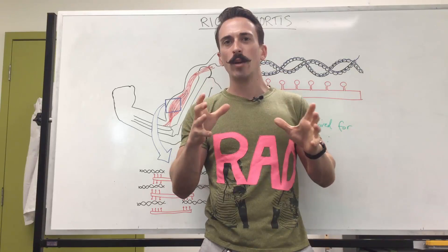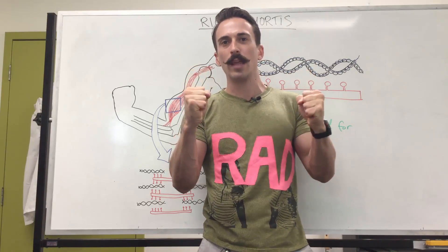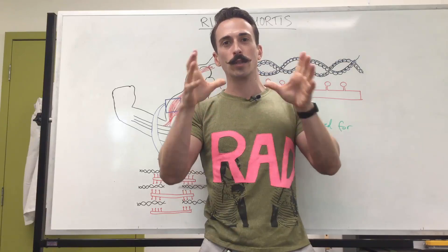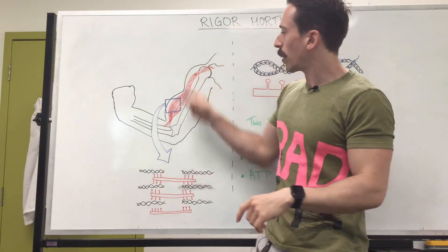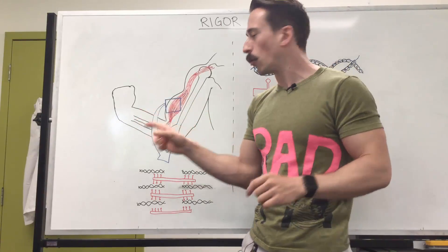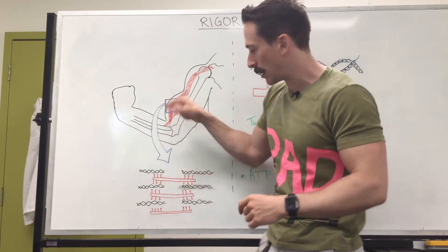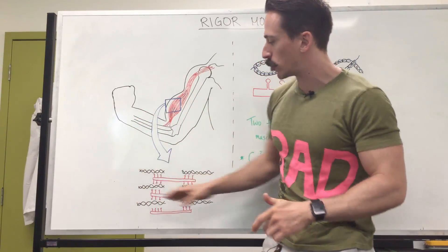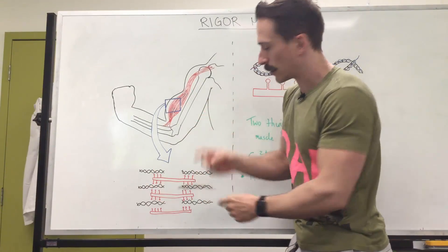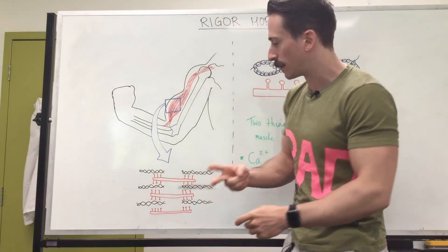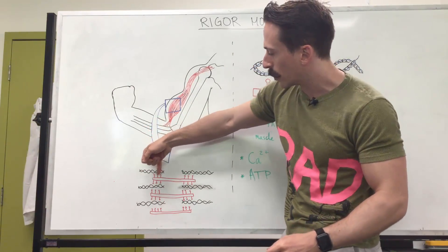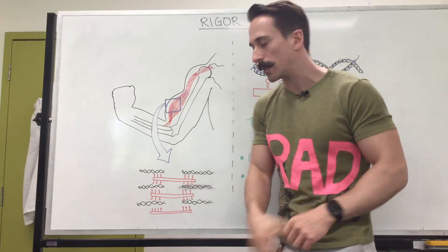In order to understand why somebody gets very stiff with their muscles post-death, we need to have a look at how muscles contract. What I've drawn up here is an arm with a bicep and we're zooming in on that skeletal muscle of the bicep. You can see there are a couple of strange-looking structures called filaments — there are two major types: the squiggly filament we call actin and the red filament we call myosin.